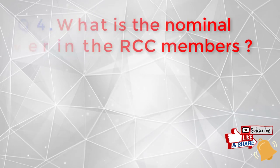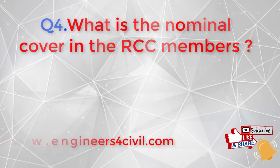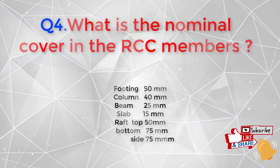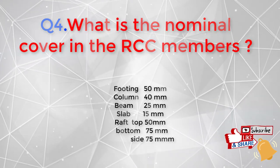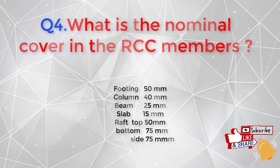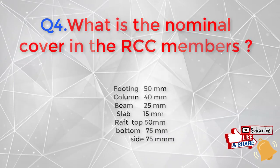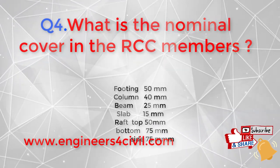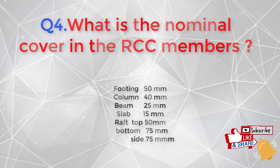The fourth question is: what is the nominal cover in RCC members? For footing it is 50 mm, for column at least 40 mm, for beams 25 mm, and for slab 15 mm. For a raft foundation, the clear cover on the top is 50 mm, on the bottom column it is 75 mm, and on the sides of the raft it is 75 mm.